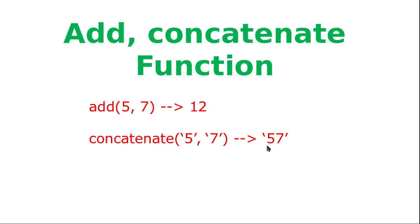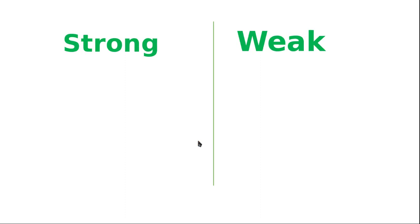Now let's see how the concept of strong typing and weak typing programming languages relates to this example. Suppose instead of supplying the same data type — like integer and integer — we supply integer and string, or in the concatenation function we supply one integer and one string. How will different programming languages react to this mismatch?